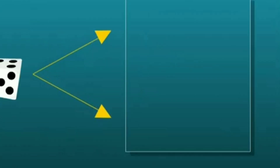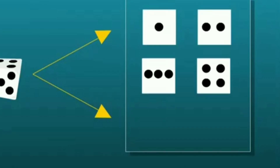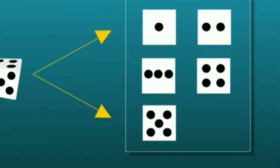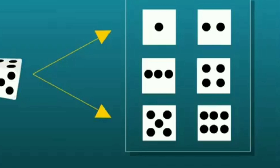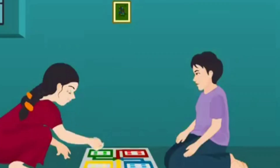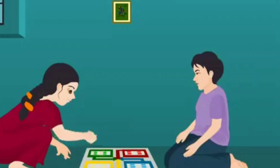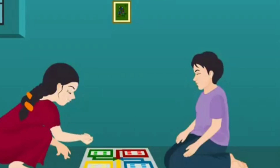Now consider another example of dice. A dice has overall six faces. Numbers 1, 2, 3, 4, 5, 6 are marked on each face. After throwing a dice, six chances of outcomes occur, giving six different results. These are examples of probability.